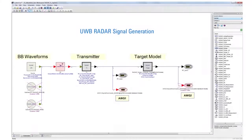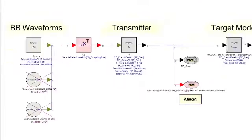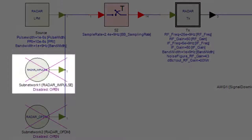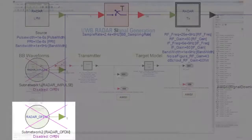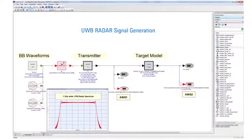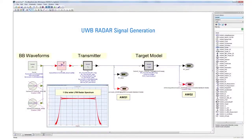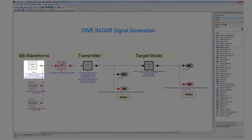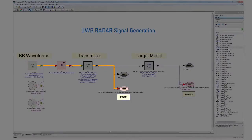In this SystemVue schematic you can see that there are three UWB signal sources, including LFM, impulse, and OFDM. The system is first simulated to verify the desired performance. Then the active source signal is downloaded to the 81180A via the signal downloader AWG1, in order to generate an unimpaired UWB transmitter signal that is used to test the radar receiver.